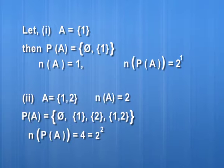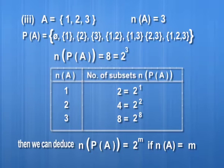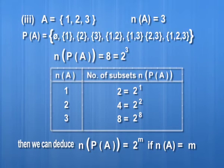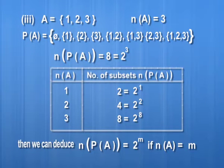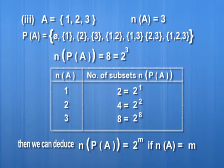Adding one more element to set A gives 3 elements. The power set will then have 8 elements — the empty set, three singleton sets, three two-element sets, and the set itself. Listing this information in a table, we find the relation: the number of elements in the power set equals 2 raised to the power m, where m is the number of elements in set A.